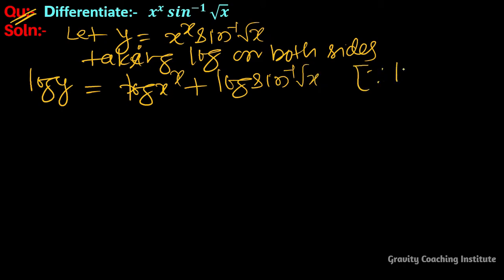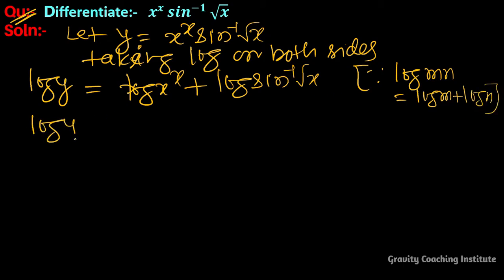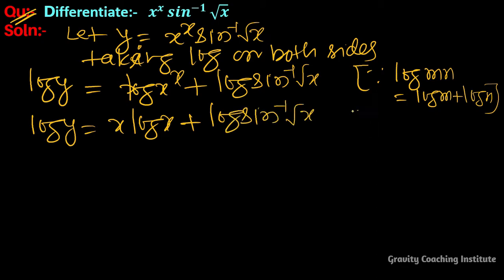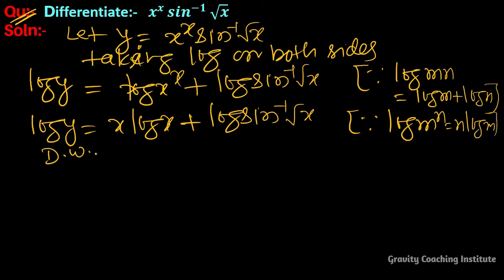Here we use the formula log(m × n) = log m + log n. So log y equal to x log x plus log sine inverse root x. And here we use the formula log m to the power n equal to n log m.